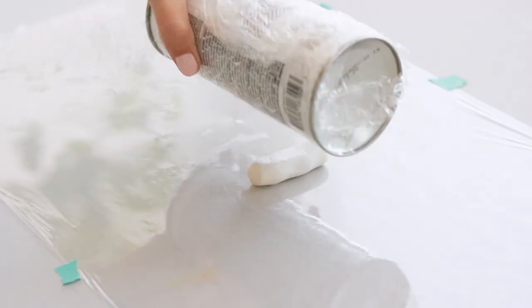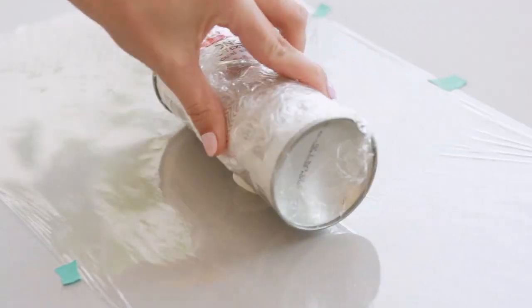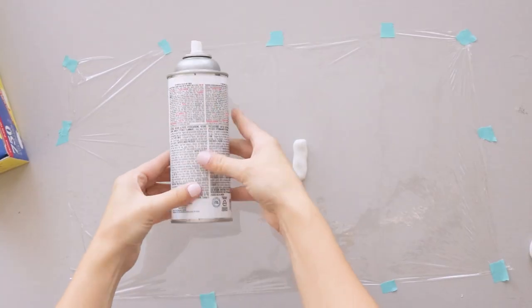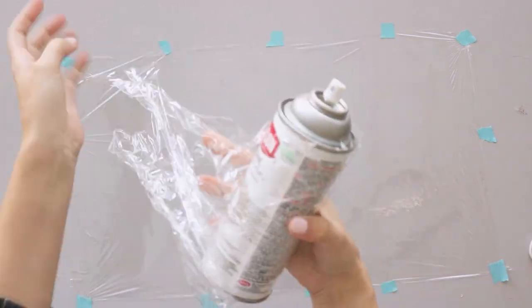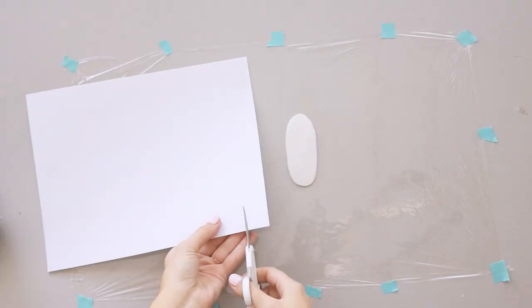Then I rolled it out, making sure it's no thinner than one-fourth of an inch. You can use a dowel to roll it out, or a spray can works fine. Just make sure whatever you use is wrapped in saran wrap so the Sugru doesn't stick to it.